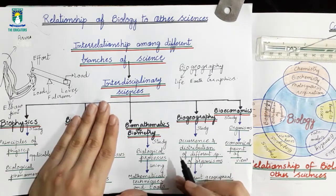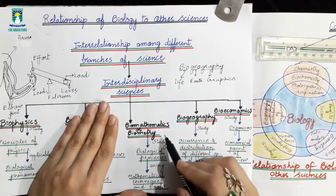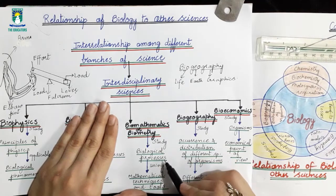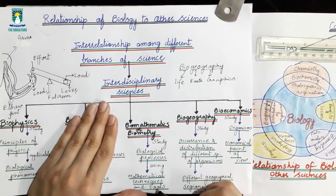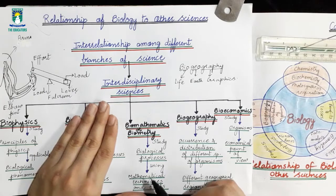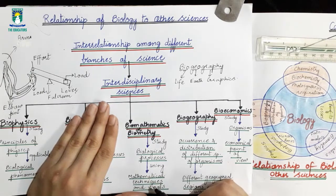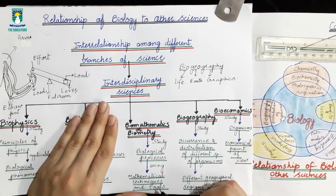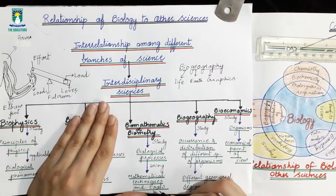If we look at its definition, Biomathematics deals with the study of biological processes using mathematical techniques and tools. You have different biological processes in living organisms, and you apply mathematical formulas and mathematical tools to them.